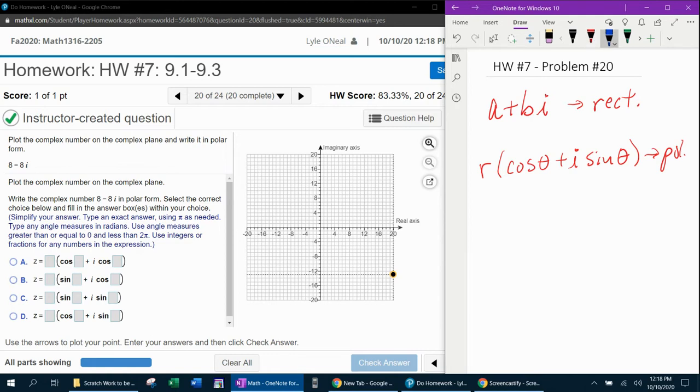So what we currently have is rectangular form. We have an A and a B. Our complex number is 8 minus 8I. So A is 8 and B is negative 8.